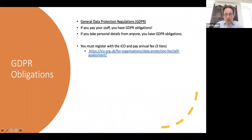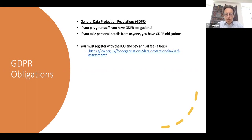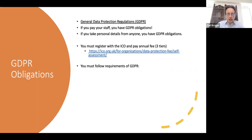There are three tiers and 99% of you will probably fall in the lowest, which is about £40 a year. Some of you will be paying about £60, and maybe one or two will push into the third tier which is over £1,000. You must follow the requirements of GDPR — well, that's not really much of a surprise if you are obligated by it.